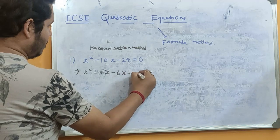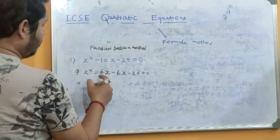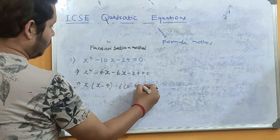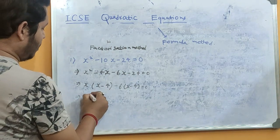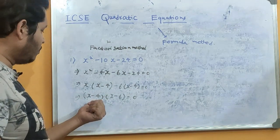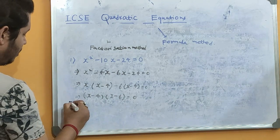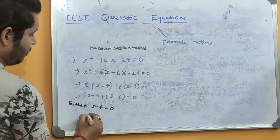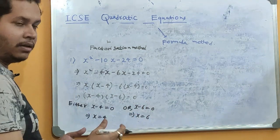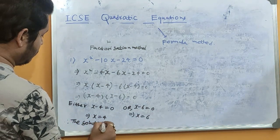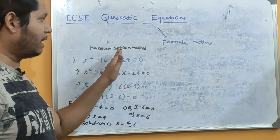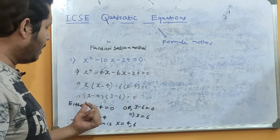So we can write it as x² − 4x − 6x − 24 = 0. Take x common from the first two terms to get x(x − 4), then take −6 common from the last two to get −6(x − 4). Taking (x − 4) as the overall common factor gives (x − 4)(x − 6) = 0. Either x − 4 = 0, giving x = 4, or x − 6 = 0, giving x = 6. Therefore the solution is x = 4 or x = 6.